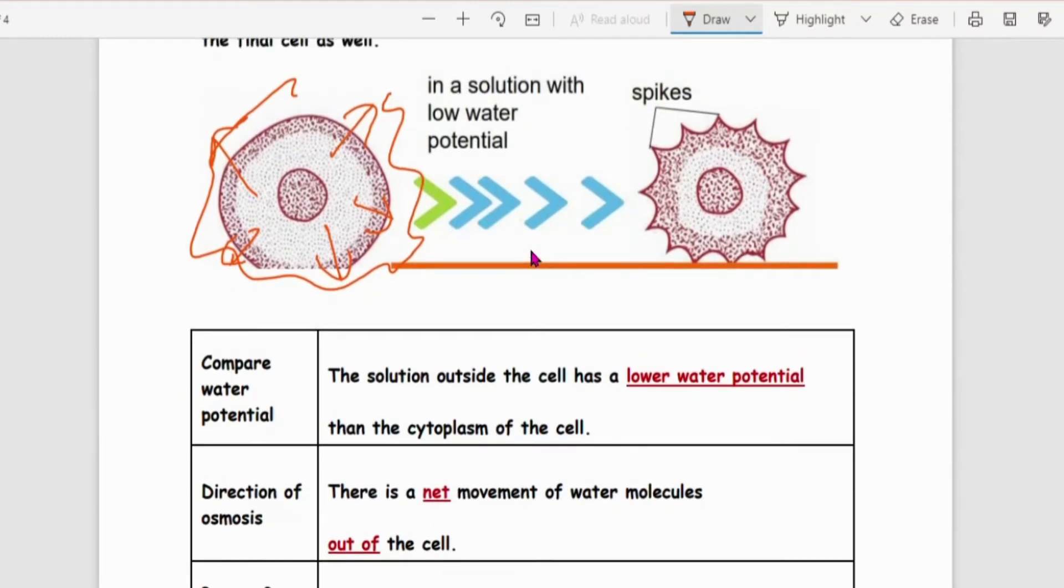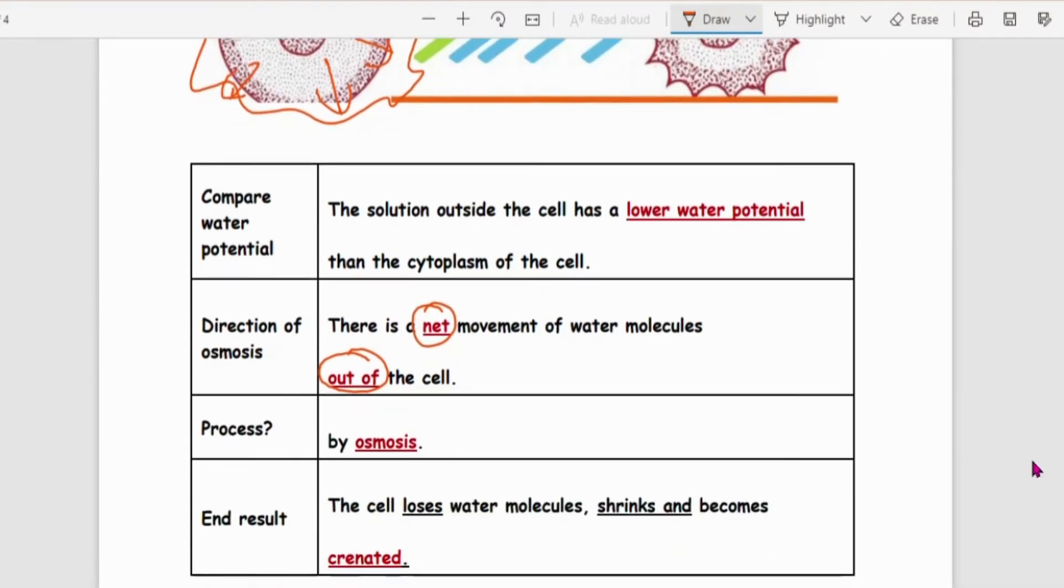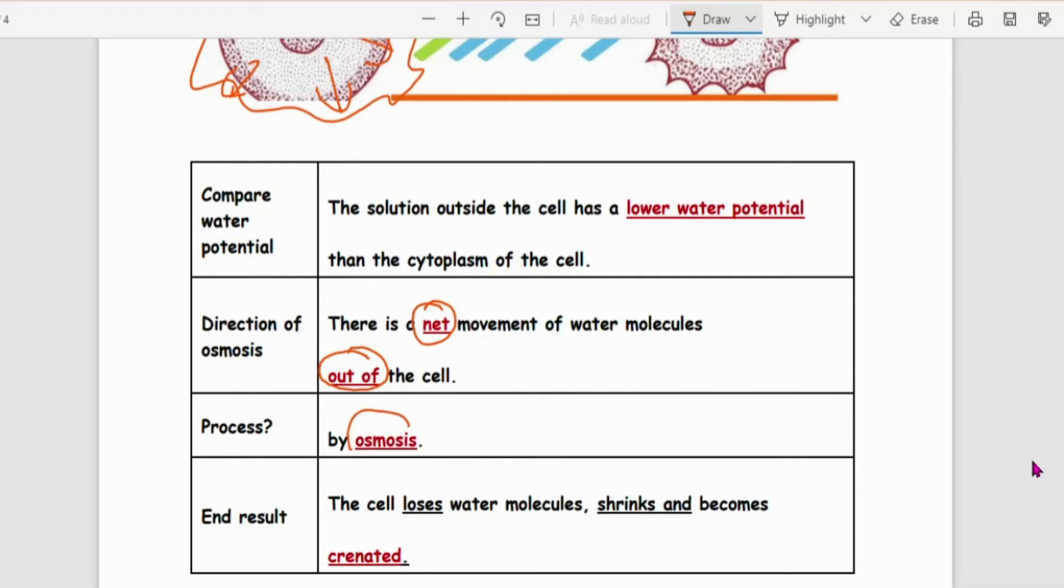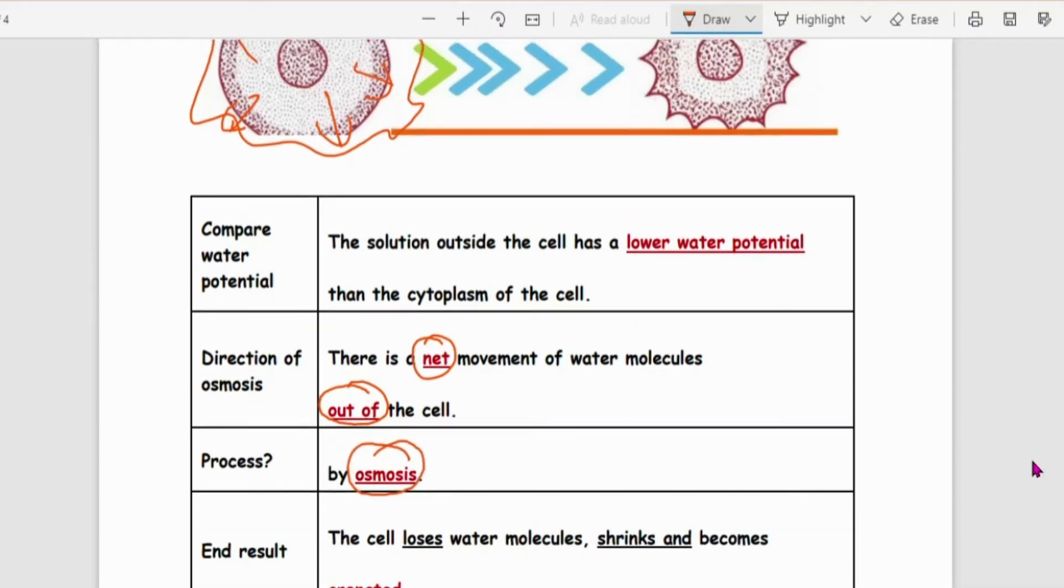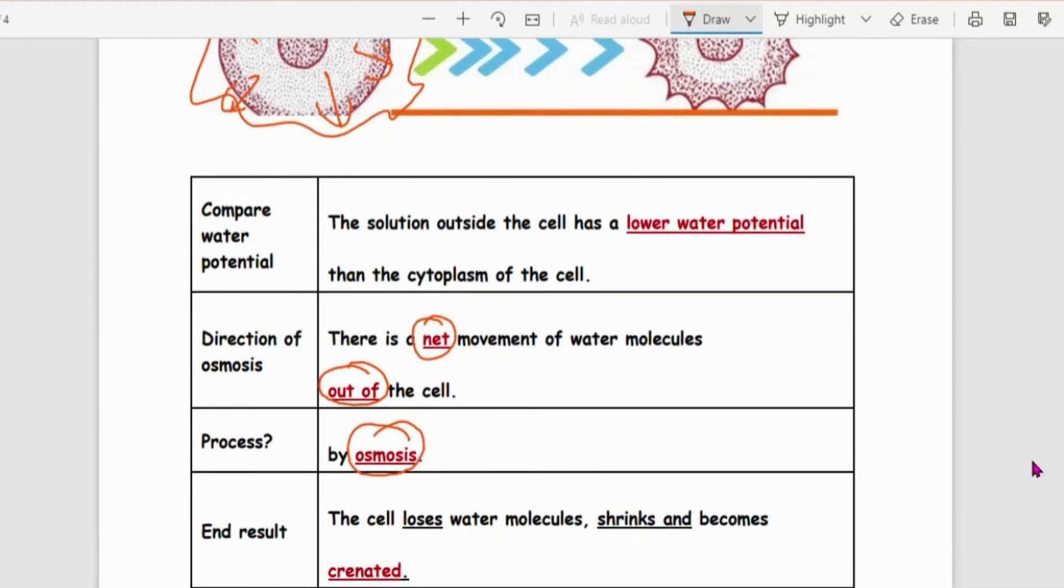So what this means is that there's a net movement out of the cell. Net movement of water molecules out of the cell. And obviously because it's water molecule movement, this is osmosis. Since the water is lost from the cell, it will shrink.